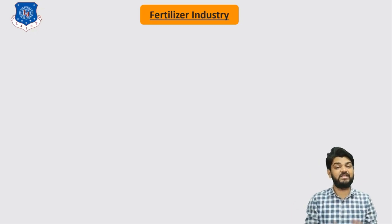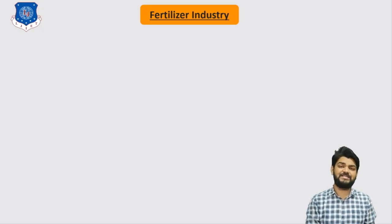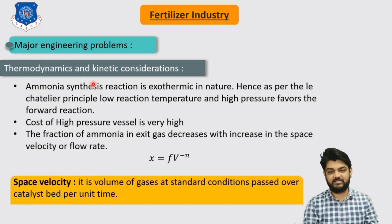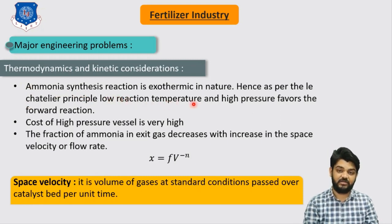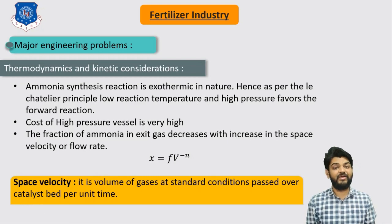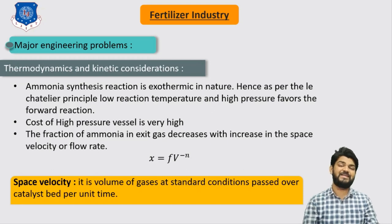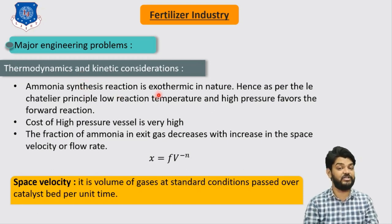Moving towards the next point — the major engineering problems associated with the Haber process for manufacturing ammonia. The production of ammonia is an exothermic reaction, so we have to consider thermodynamics and kinetics. This ammonia synthesis reaction liberates some amount of heat after the reaction is completed.